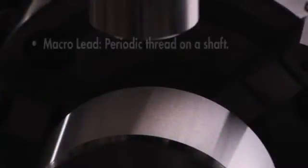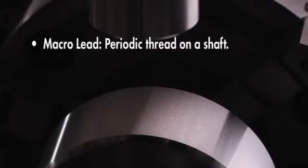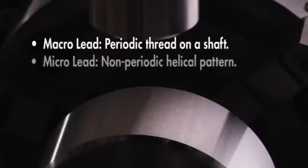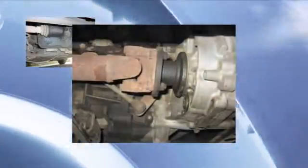Periodic thread on the shaft is called macro lead, while a non-periodic helical pattern is denoted as micro lead. Macro and micro lead both contribute to the overall leakage profile of a shaft seal interface.